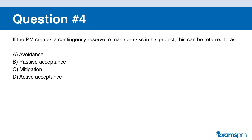Let's move on to question number four. If the project manager creates a contingency reserve to manage risk on his project, this can be referred to as: A: avoidance. B: passive acceptance. C: mitigation. D: active acceptance.